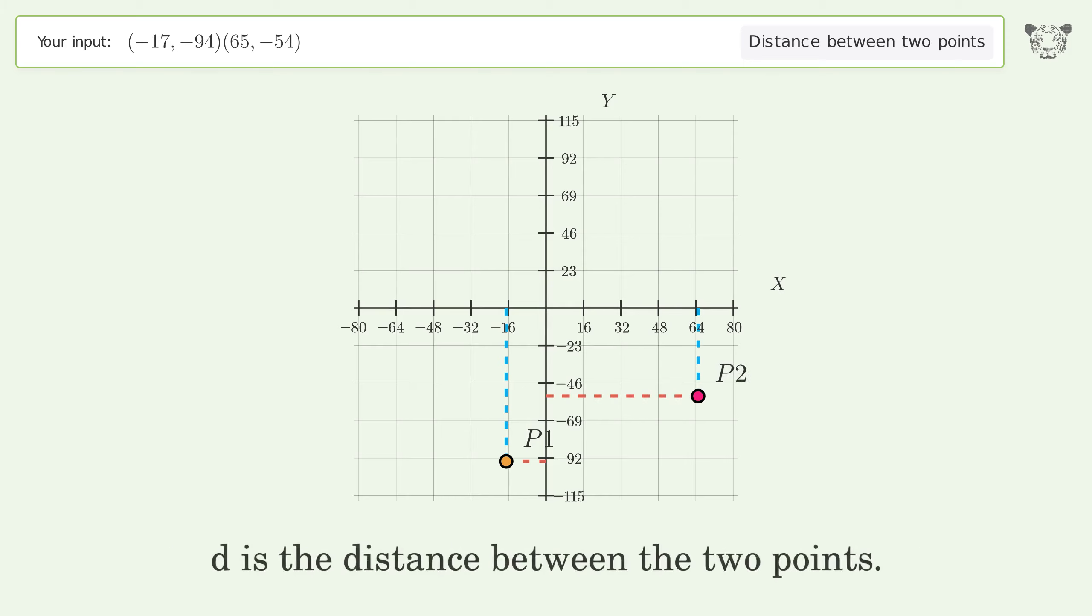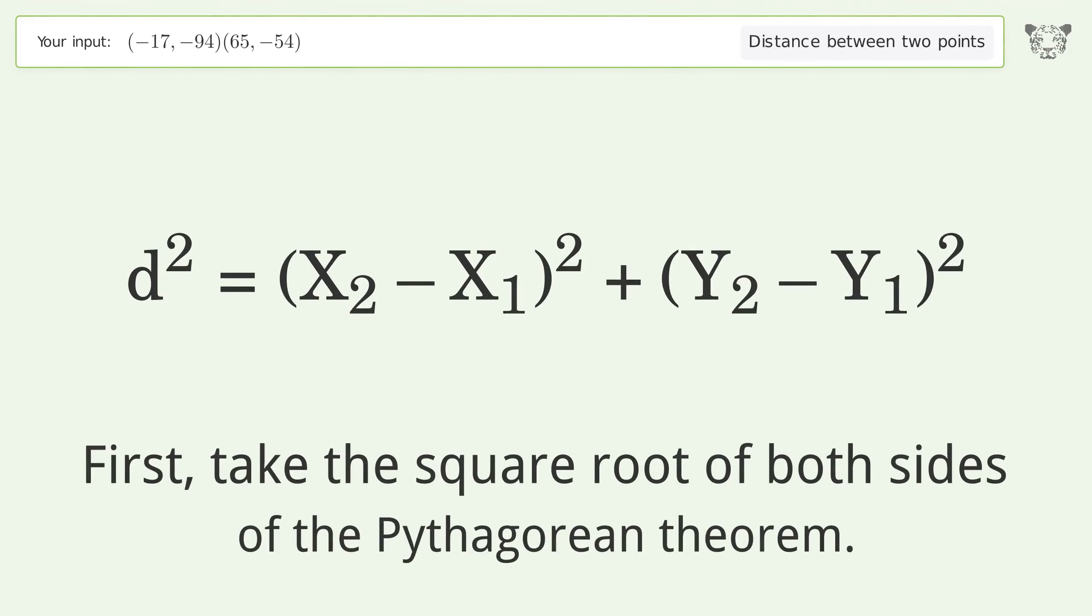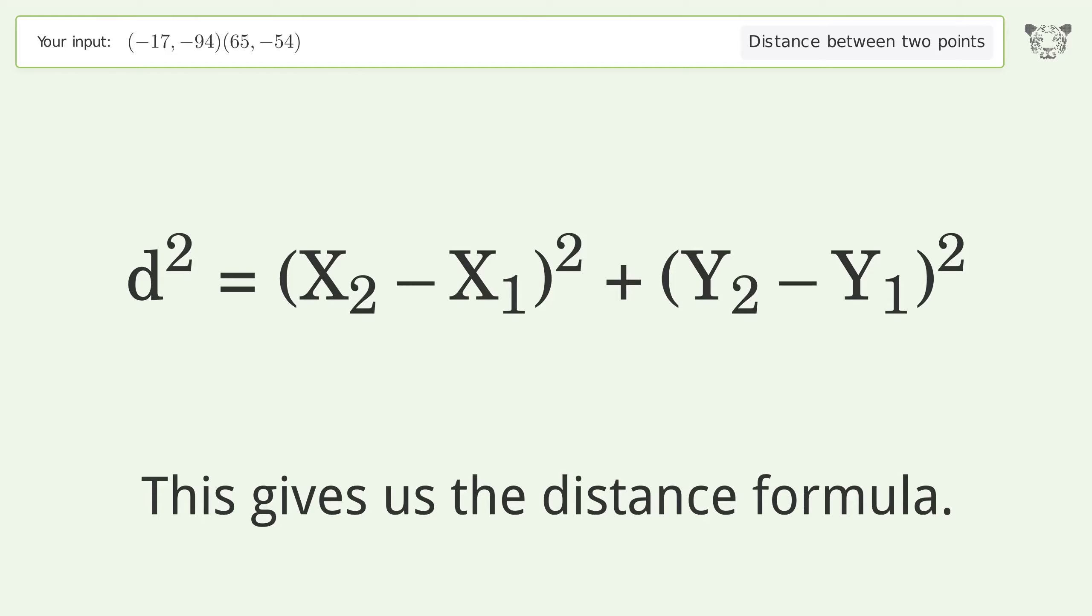d is the distance between the two points. First, take the square root of both sides of the Pythagorean theorem. This gives us the distance formula.